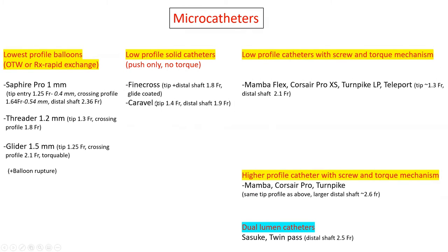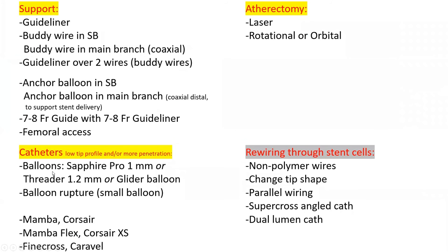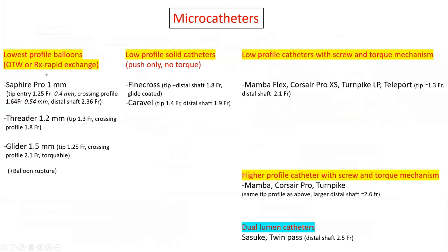I will move to microcatheter description, which is the second axis of support. There are four types of microcatheter used for support, and a fifth type — the dual lumen catheter (Sasuke and Twin Pass) — used for double wiring in difficult side branch situations. For support, the four main types are: low profile balloons (the lowest profile catheter overall is the Sapphire Pro one millimeter balloon), the Threader and Glider balloon. When I describe them, I'll mention the tip entry profile and the distal shaft — sometimes the tip engages but the shaft doesn't go, though they are tapered to allow that transition.